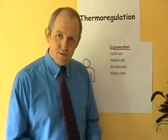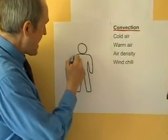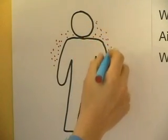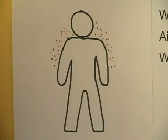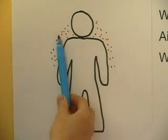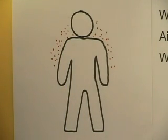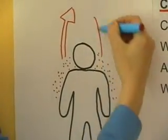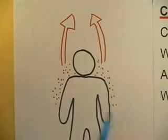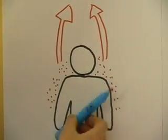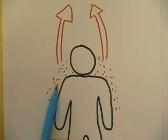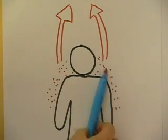It's exactly the same when you think about heat loss from the body. The body is going to warm up the air round about it, providing, of course, that the air is cooler than the body, which is very often the case unless you're in a hot tropical climate. So air round about the body is warmed up. As this air is warmed up, the molecules are going to vibrate more vigorously. Therefore, the air is going to become less dense. Because the air is less dense, the hot air will float upwards, away from the body. So the body warms up the air, the air becomes less dense and floats upwards. And as the air moves upwards, it's going to leave a partial vacuum round about the body.